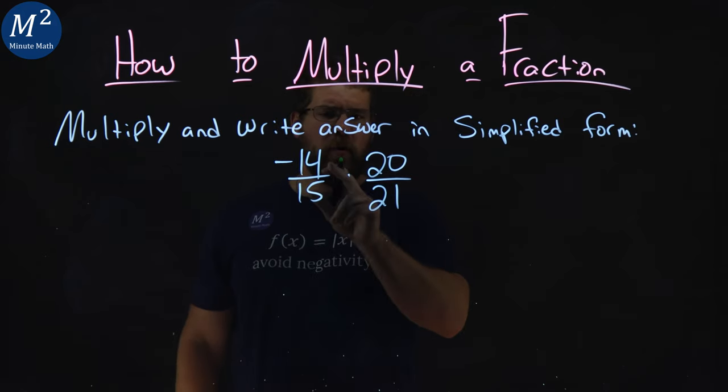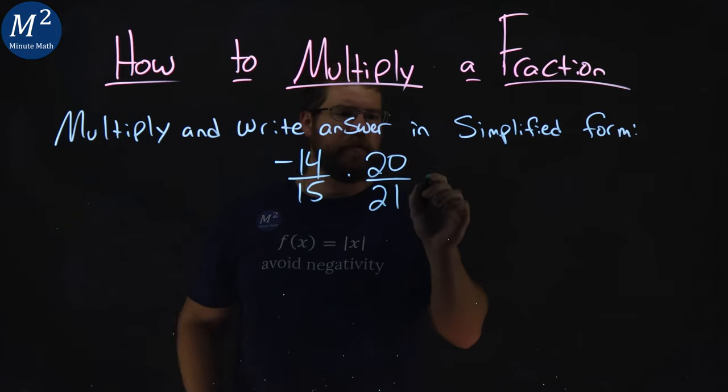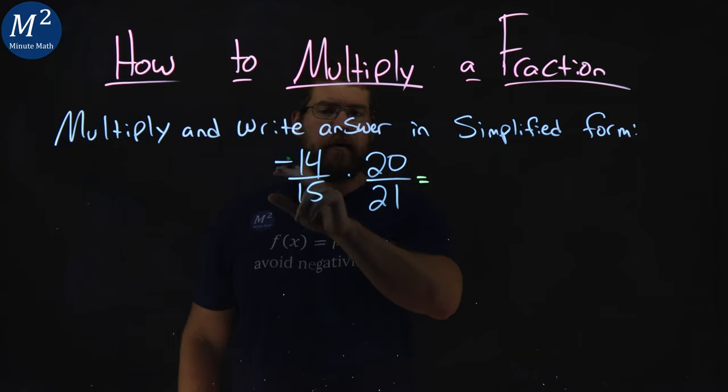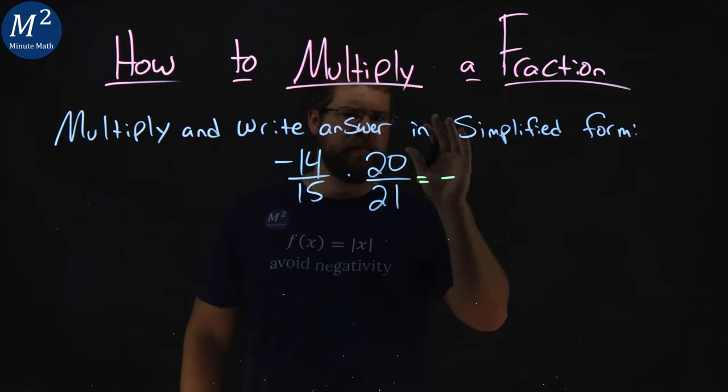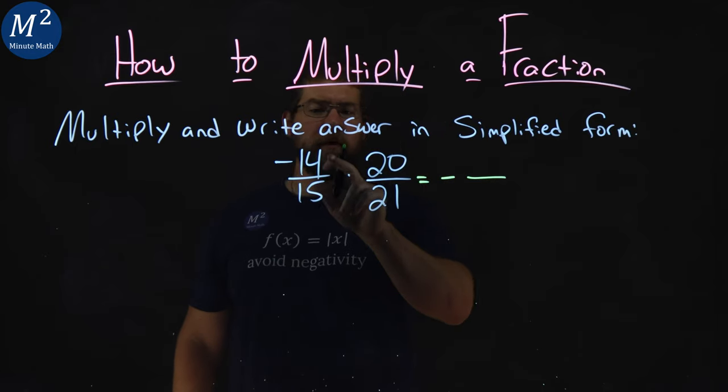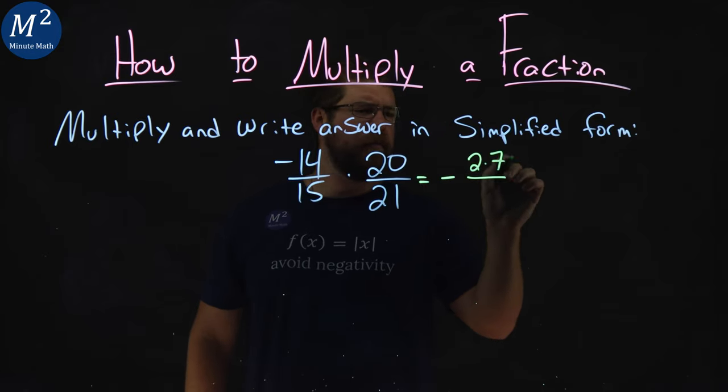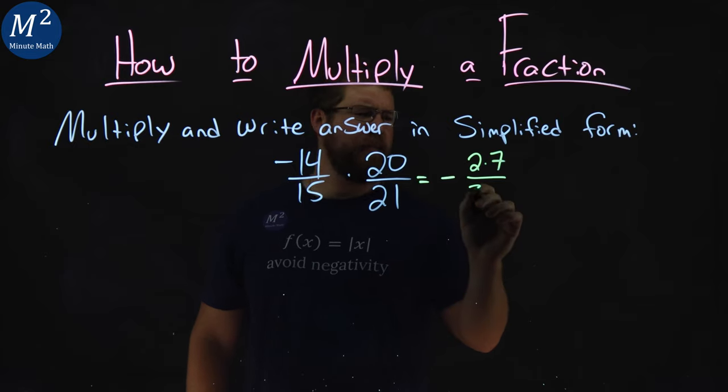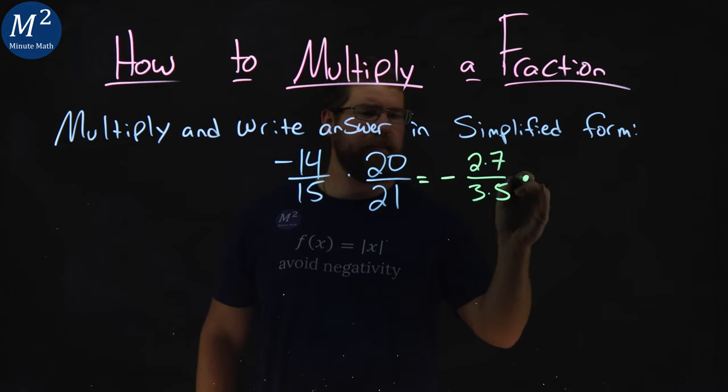We know we can break down each of these to their corresponding factors. Negative 14, let's put the negative just out here and deal with that later. 14 is 2 times 7. 15, 3 times 5. Multiply that out.